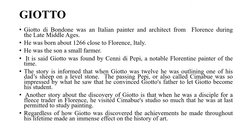Giotto di Bondone was an Italian painter and architect from Florence during the late Middle Ages. He was born about 1266 close to Florence, Italy, and was the son of a small farmer. It is said that Giotto was found by Senni di Pepi — a notable Florentine painter of the time, also known as Cimabue — who became the guru of Giotto.